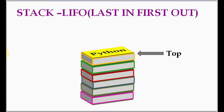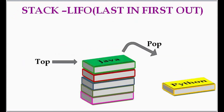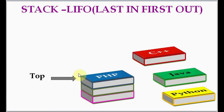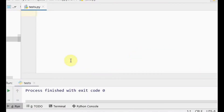The last element added is Python, and when you perform the pop operation, the last added element will be deleted first. After performing the pop operation, Python is deleted from the stack, now containing five books again. Then Java is also popped out, then C++ is popped out. Every time, the top position points to the topmost element in the stack. Both push and pop operations happen at the same end only.